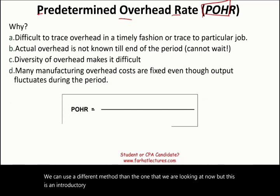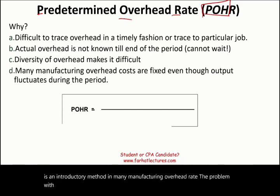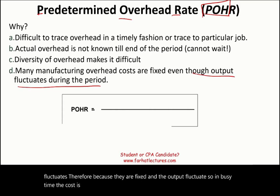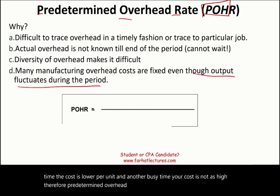Another reason is that many manufacturing overhead costs are fixed, but the output fluctuates. Because they are fixed and the output fluctuates, in busy times your cost per unit is lower, and in slower times it's not as low. Therefore, the predetermined overhead rate evens things out.